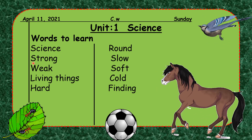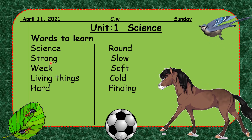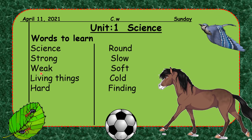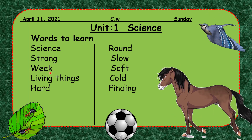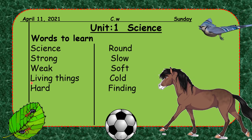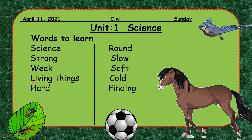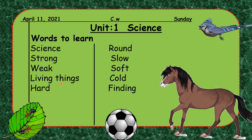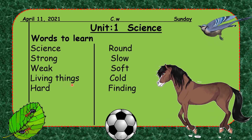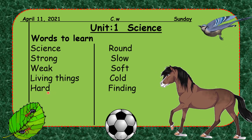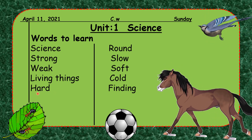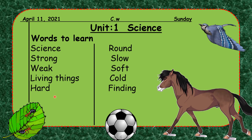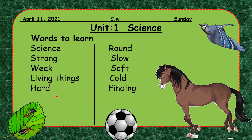Next word: living things — L-I-V-I-N-G, T-H-I-N-G-S — living things. Next word: hard — H-A-R-D. Now for the next five words, draw a center line and write them on the right side.